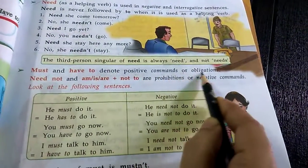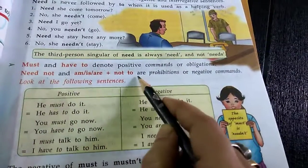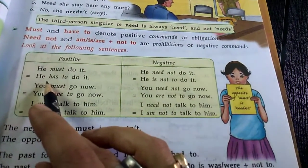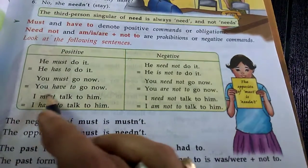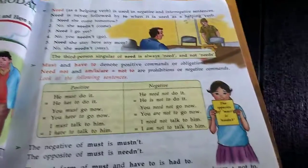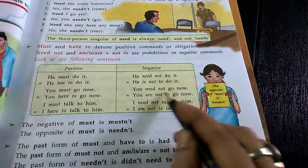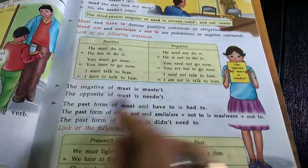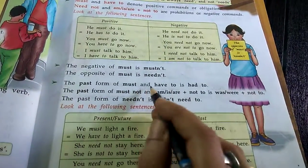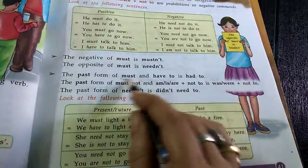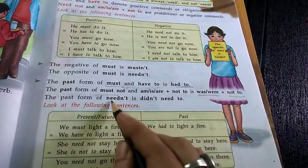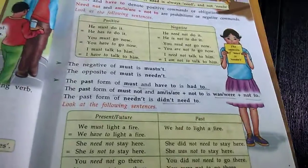Must and have to denote positive command or obligation. Need not and are not to are prohibitions or negative commands. Positive examples: We must do it / He has to do it. You must go now / You have to go now. I must talk to him / I have to talk to him. Negative examples: He need not do it / He is not to do it. You need not go now / You are not to go now. I need not talk to him / I am not to talk to him. The negative of must is mustn't. The opposite of must is need not.